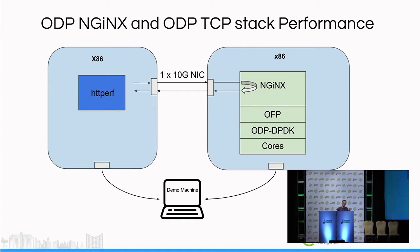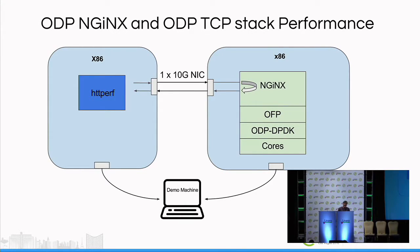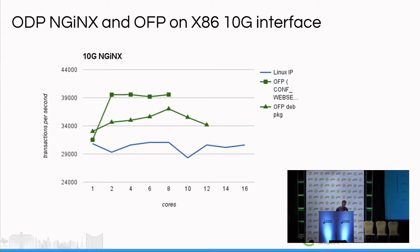We have two different flavors of NGINX: one running on the TCP/IP stack of the Linux kernel, and the other running on OFP, which is OpenFastPath — a user space IP stack running on top of ODP. Since it is x86, it was running on ODP-DPDK.